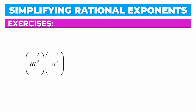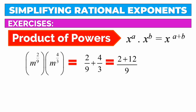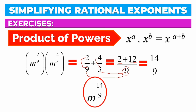Next: m raised to 2 over 9 times m raised to 4 over 3. We use the product of powers and add the exponents: 2 over 9 plus 4 over 3. The LCD is 9. 9 divided by 9 is 1, times 2 is 2; 9 divided by 3 is 3, times 4 is 12. Adding the numerators: 2 plus 12 is 14 over 9. Our final answer is m raised to 14 over 9.